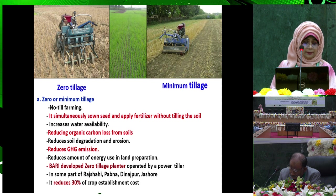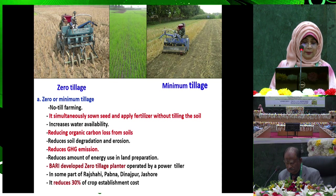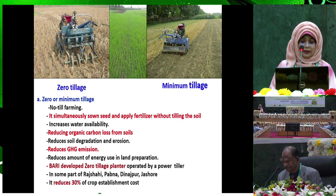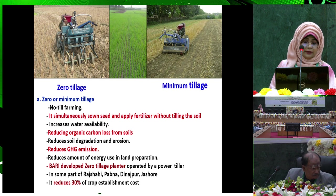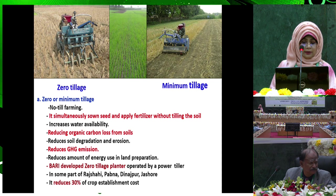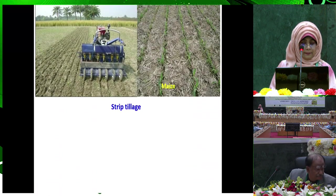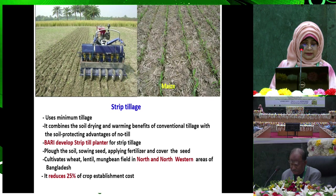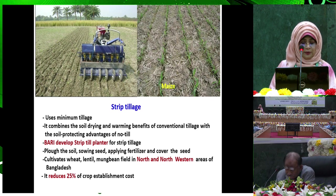In this system, we use zero tillage or minimum tillage. No-till farming simultaneously sows seeds and applies fertilizer without tilling the soil, reducing organic carbon loss from soil and reducing greenhouse gas emissions. BARI developed a zero tillage planter operated by a power tiller. For strip tillage, BARI developed a strip-tilled planter for cultivating wheat, lentil, and movement field crops in northern areas of Bangladesh.